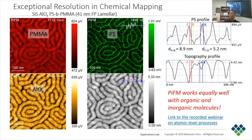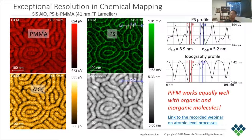Looking at the cross-section profile of the PS chemical map in green, we see that the PS block now measures about 9 nm in width, shrunk from 21 nm in the pre-SIS sample. The 10% to 90% transition for the PS block now shows about 5 nm, which demonstrates the exceptional spatial resolution of PIFM chemical maps. More on this application and directed self-assembly is provided in the link.